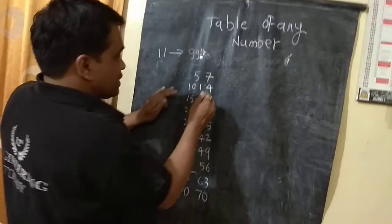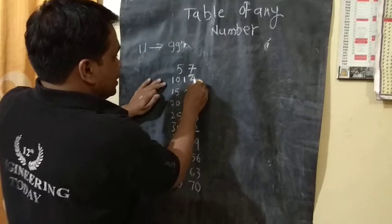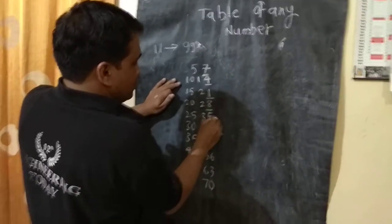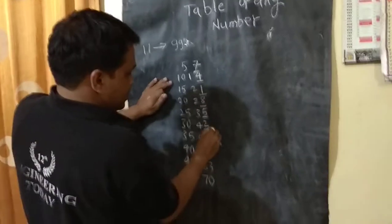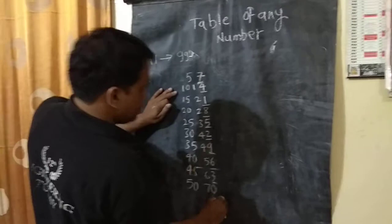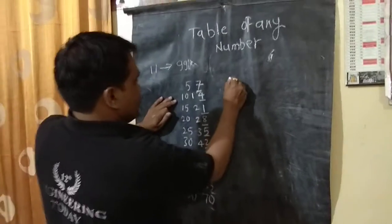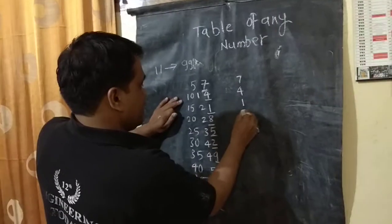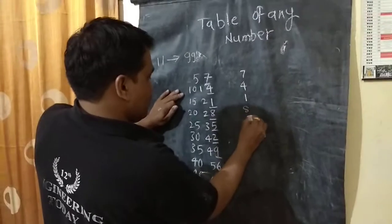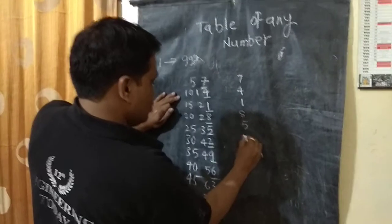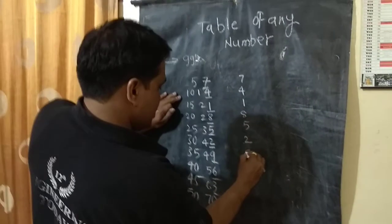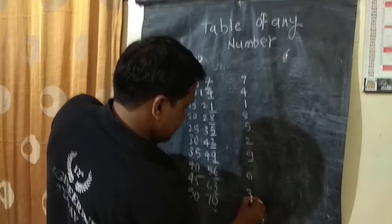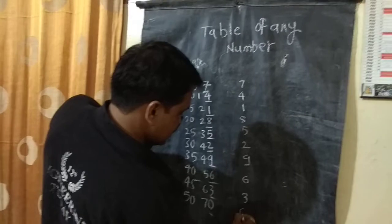I will write the unit digit, or unit place. So the unit place digits are: 7, 4, 1, 8, 5, 2, 9, 6, 3, 0.